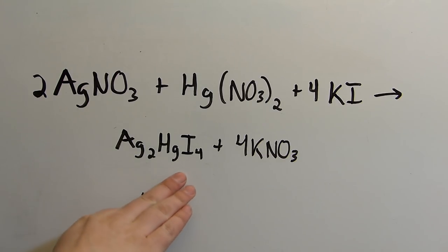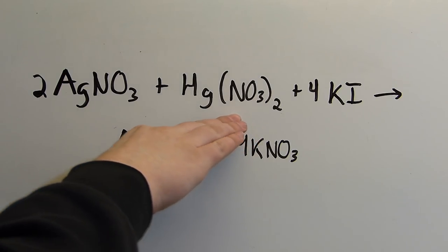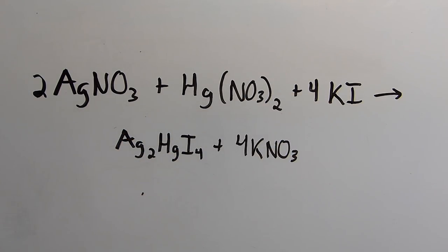To form the tetraiodomercurate compound I simply need to mix together a soluble salt of silver with a soluble salt of mercury and a soluble iodide. In this case we'll be using potassium iodide and the nitrates of both silver and mercury since all of these are very soluble in water. When combined they form this tetraiodomercurate compound which is insoluble and precipitates, leaving potassium nitrate behind in the solution which can then be filtered.